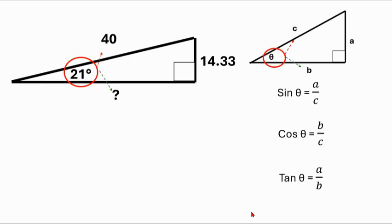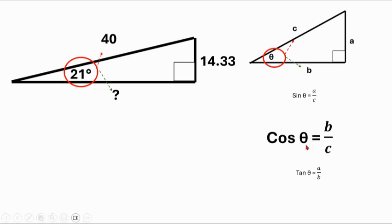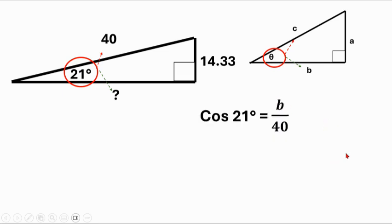Then we need to find the other missing side, which is the adjacent side. We have C, we want to find B, so let's look at the one that has both B and C in it. That'd be cosine. We're going to put 21 degrees in for cosine, we don't know B, and we know that C is going to be 40.